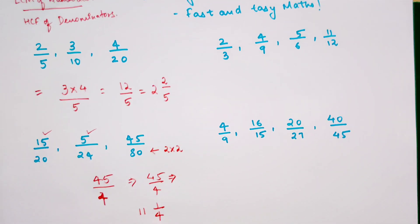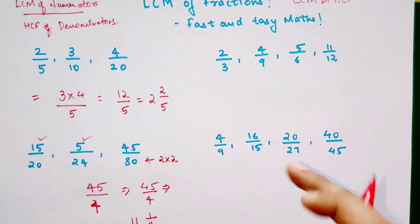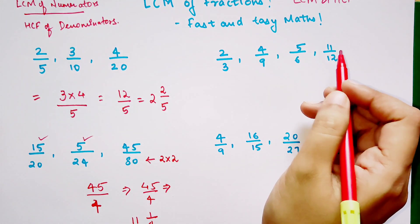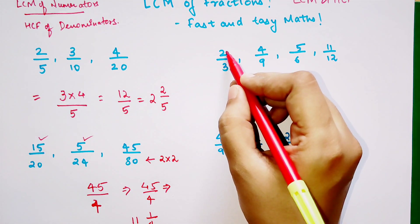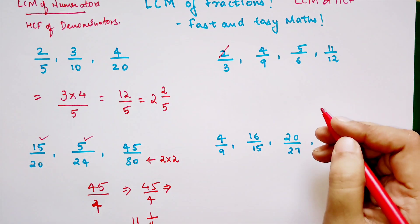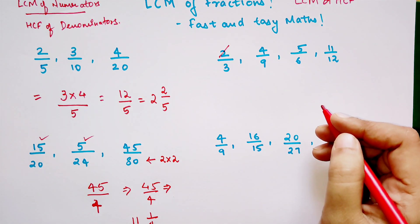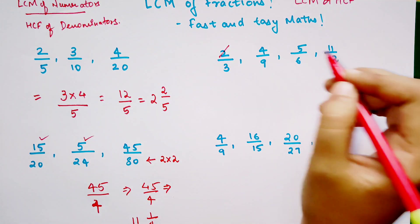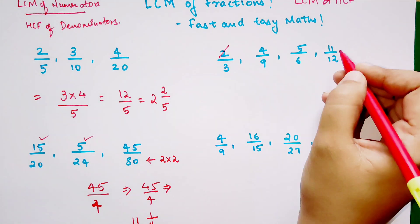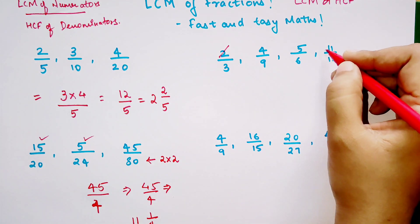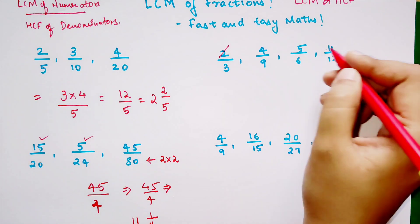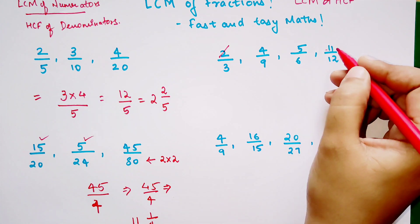So now over here we have 2, 4, 5, and 11. Now see, we have 4 which is coming in 2's table, so we are going to ignore 2. And 5 is a prime number which is coming in neither of the numerators. And 11 is also a prime number. So we definitely have to multiply 4, 5, and 11.